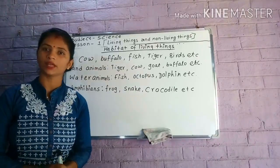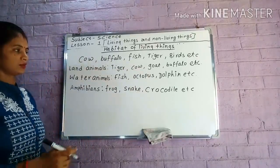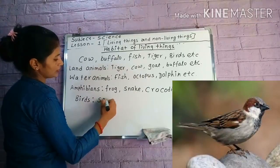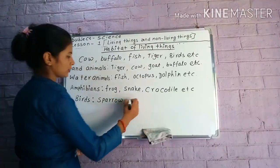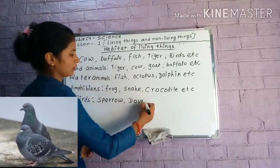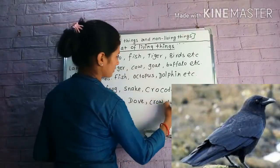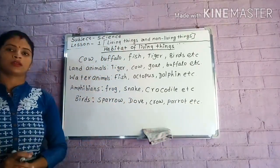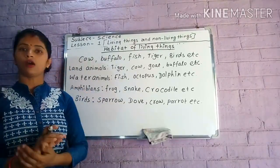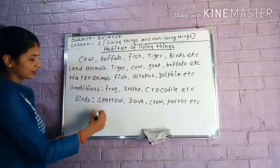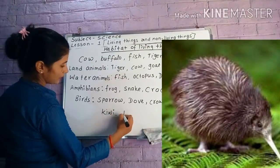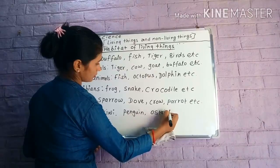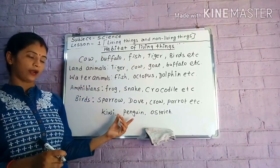Some living things can fly in the air — these animals are called birds. The names of birds are sparrow, dove, crow, parrot, etc. These are birds; they fly in the air. But all birds do not fly. Some birds like kiwi, penguin, and ostrich cannot fly in the air — they walk on the land.